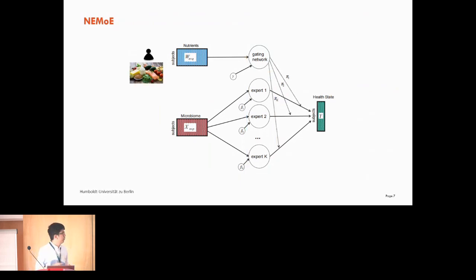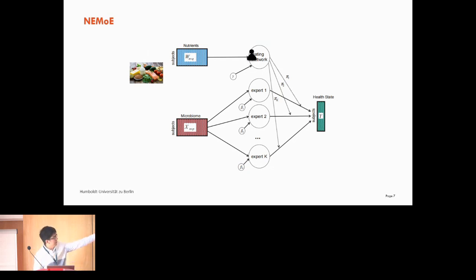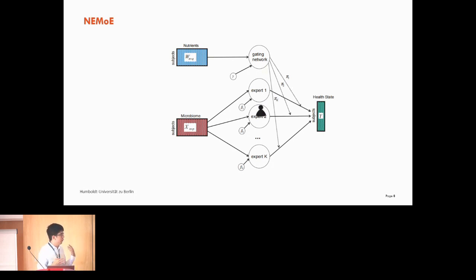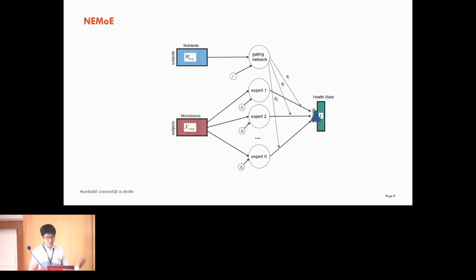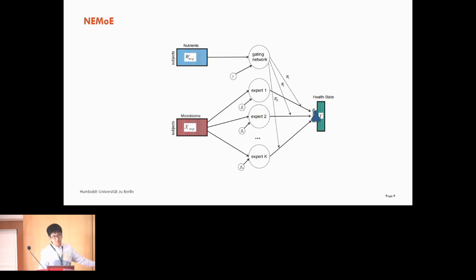As a quick illustration: suppose we have a patient and we know their nutrition intake. It goes to the gating network, which decides which expert it should go to — for example, expert two. Expert two focuses on the previously learned sub-cohort and decides whether the patient is healthy or has disease based on their microbiome. For example, this one is more like healthy, and finally the health status is decided. This is NEMO — please refer to our published paper for more detail.